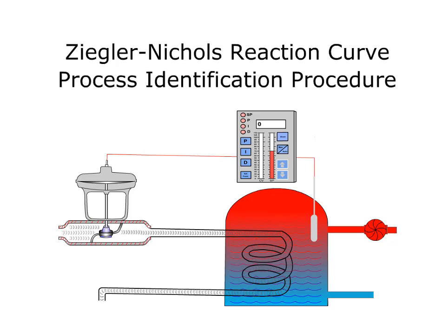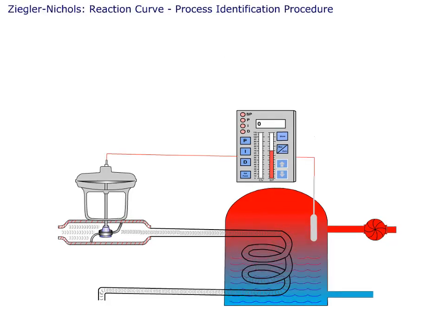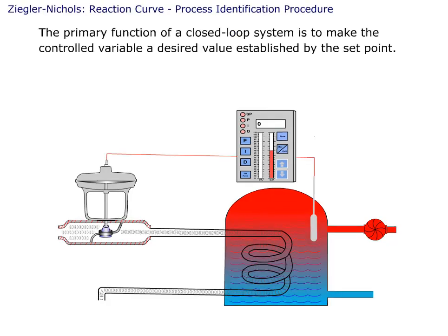Welcome to the Ziegler-Nichols Reaction Curve Process Identification Procedure. The primary function of a closed loop system is to make the controlled variable a desired value established by the set point.